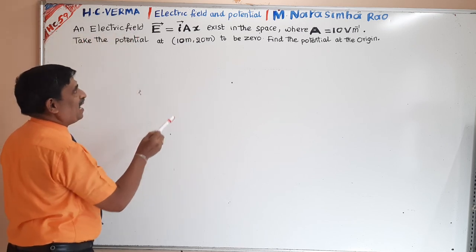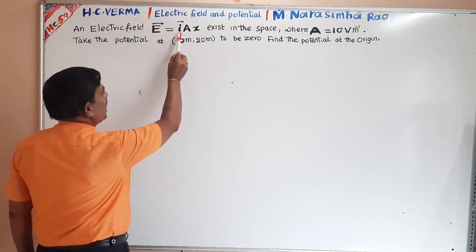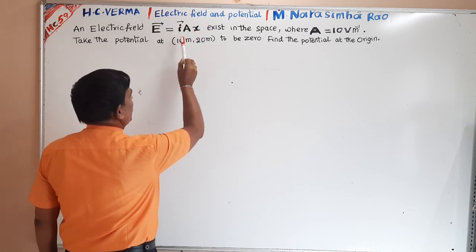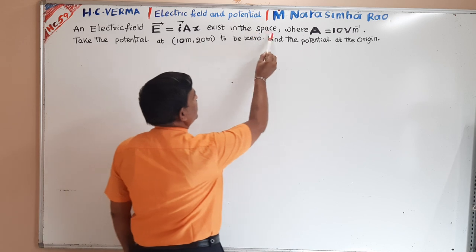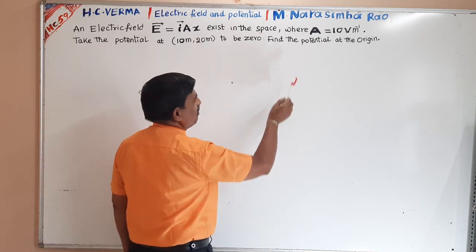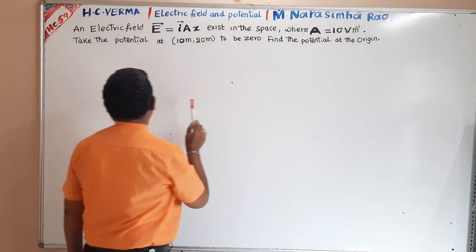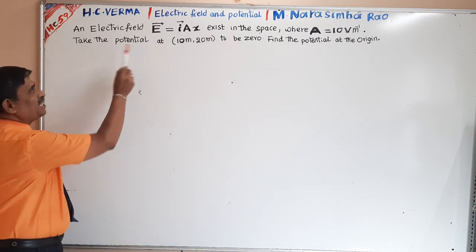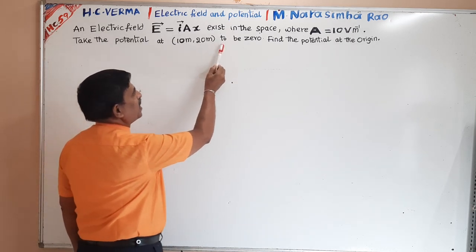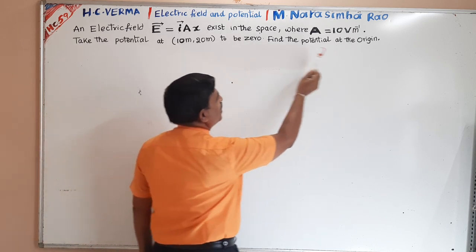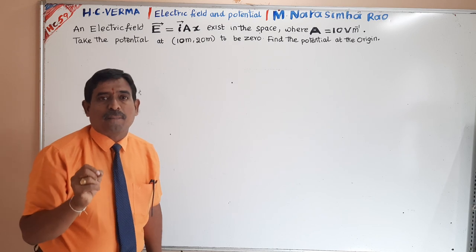An electric field E is equal to A times x times î (unit vector along X axis) exists in the space, where A is equal to 10 volt per meter. Take the potential at (10 meter, 20 meter) to be 0. Find the potential at the origin.